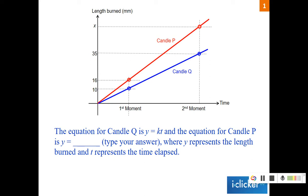Now, where y represents the length burned, so the y is actually on the vertical axis, whereas t is the horizontal axis. If this equation is y equals kt, can you guess what is the equation of this? Type in your answer, give yourselves a minute.